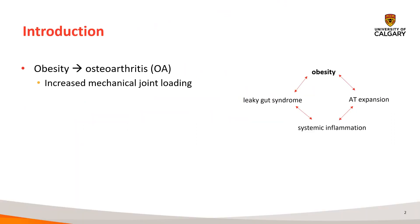Research has shown that there tends to be an increased incidence of osteoarthritis in obese individuals, attributed to the increase in mechanical joint loading. However, this rationale has actually been unable to explain OA in non-weight-bearing joints, such as our hands and fingers, suggesting there may be a different pathway in which obesity can contribute to developing OA.